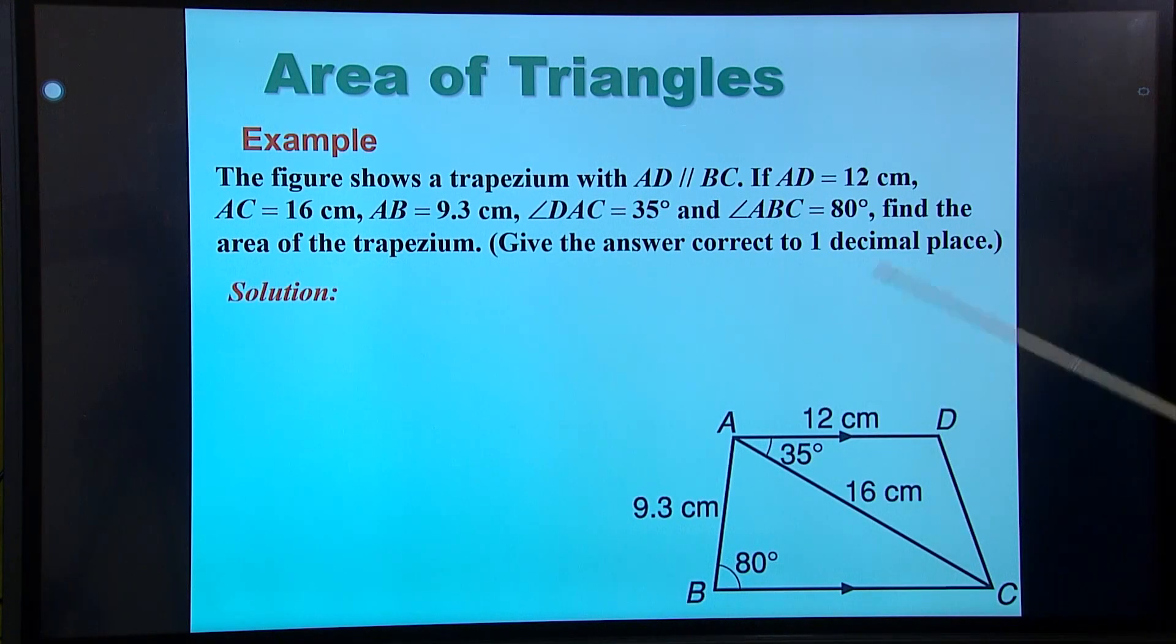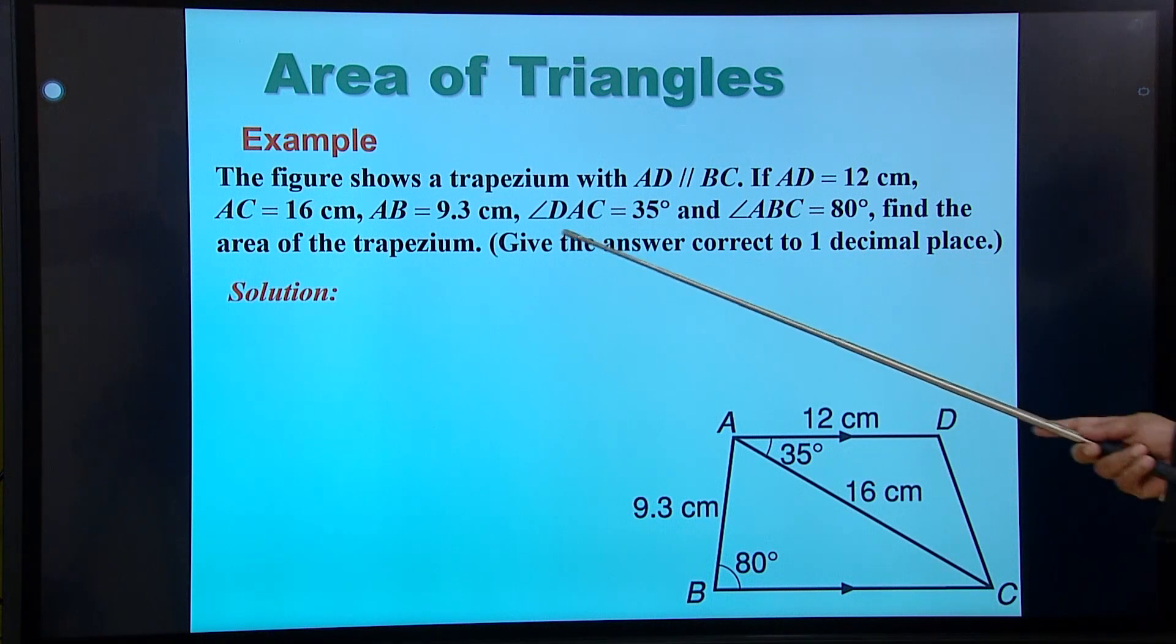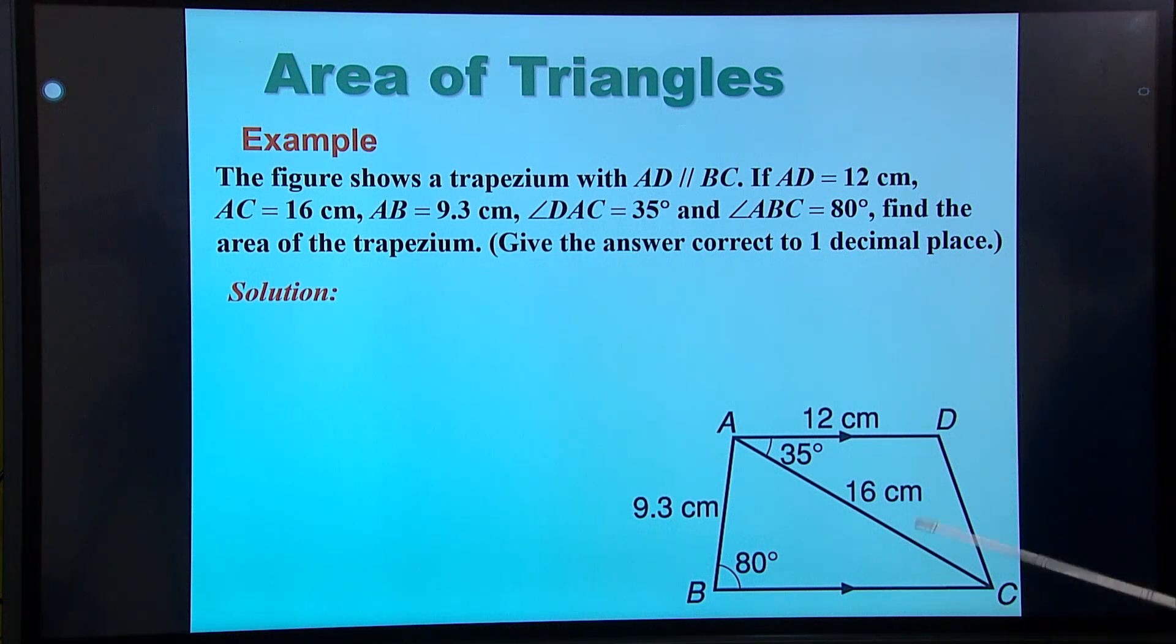Let's have a look at this example. There's a trapezium. There's all the information. 12 centimeters across, 16 centimeters that way. There's some angles. There's that dimension. And what is the question? Find the area.